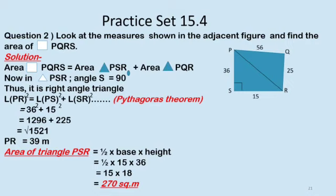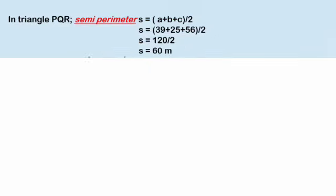Now find the area of triangle PSR. Formula is half base into height, which is equal to half into 15 into 36. After cancellation, 15 into 18 is equal to 270 square meter.